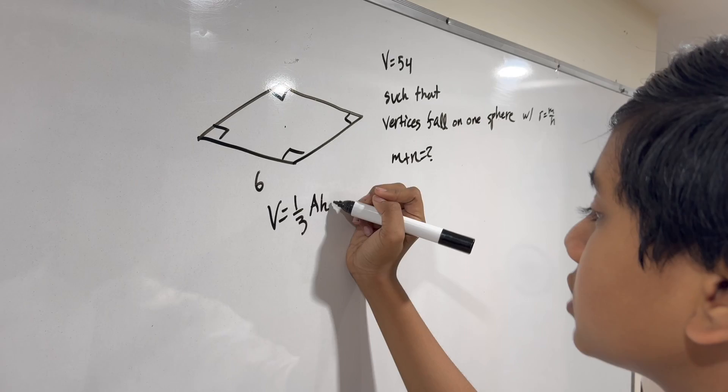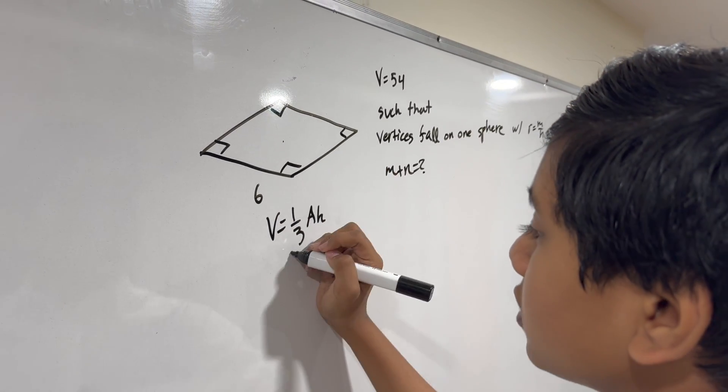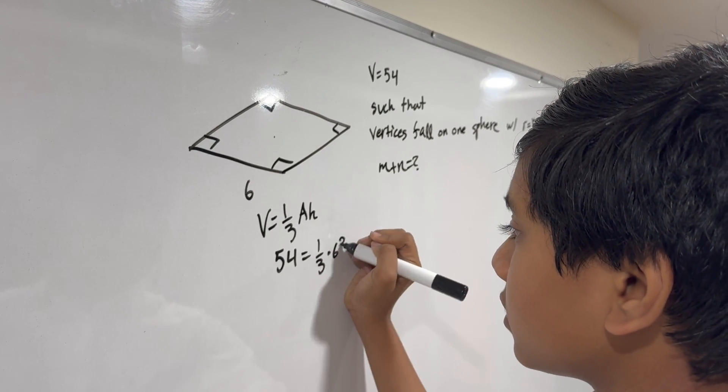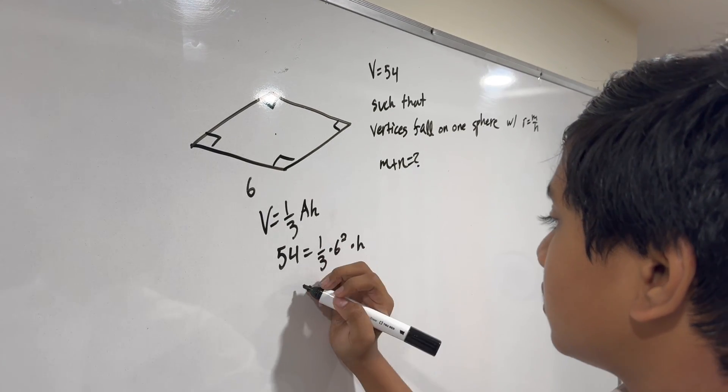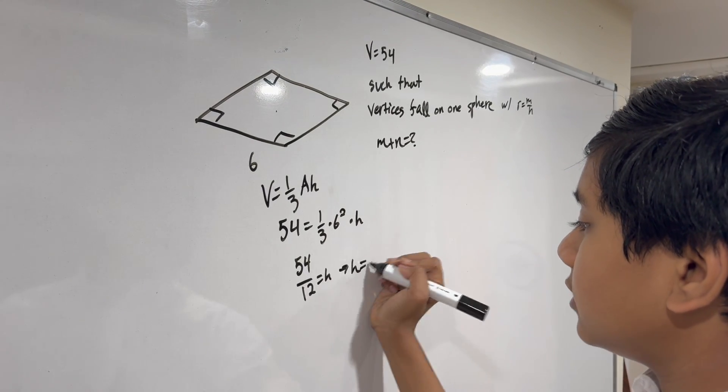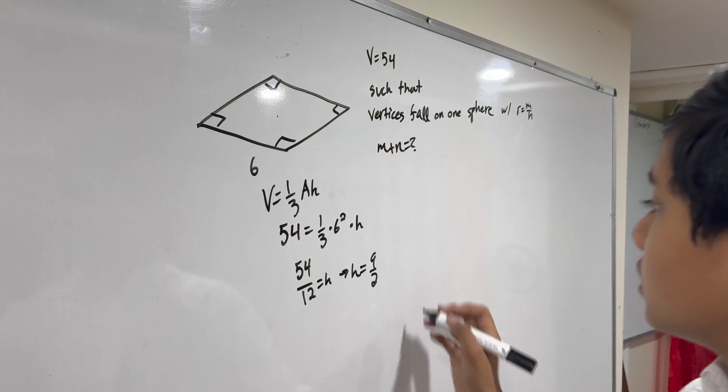In this case we know the volume is 54 and the area of the base is just 6 squared, so you get 54 over 12 equals h, which simplifies to h equals 9 over 2.